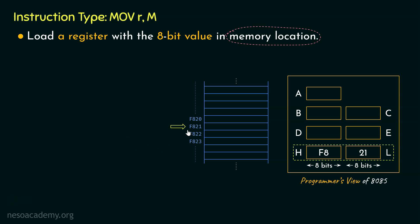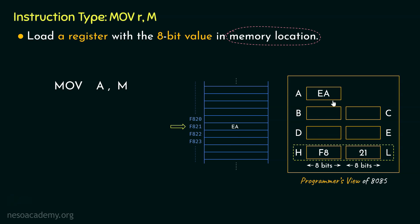Now let's assume within location F821 we have the value EA. This is an 8-bit value because it is a 2-digit hexadecimal value. Now if we would like to move this data from this memory location into register A, that is the accumulator, the instruction MOV A,M will have to be executed by the microprocessor. Remember, anything after the comma is the source and anything before the comma — register A in this case — is the destination. So once this is executed, the data EA will be moved to the accumulator register.